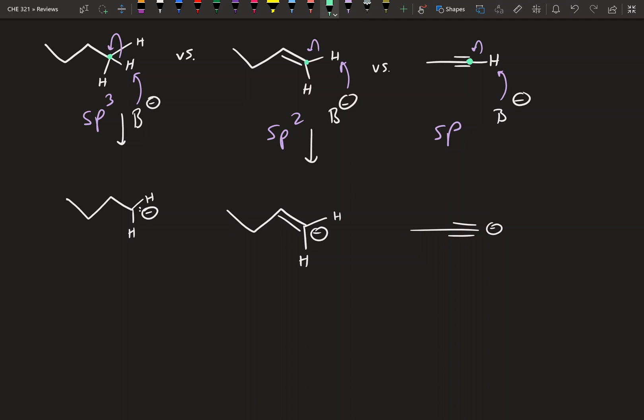If we look at sp3, we have three p orbitals and one s, total of four, so the s character is 25%. Here in the sp2, we have two p orbitals and one s, total of three orbitals, so this is going to be one third, 33%. And sp hybridized, we have one s, one p, total of two, so it's 50% s.